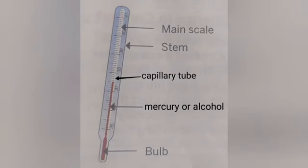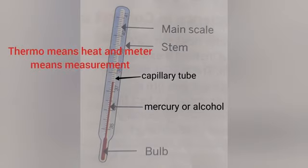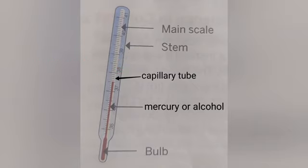In the picture you can see a thermometer. Thermo means heat and meter means measurement. So a thermometer is a device which is used to measure the amount of heat energy present in a body, or it is used to measure the temperature of a body.